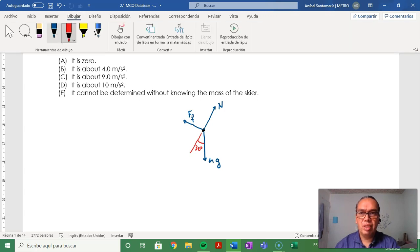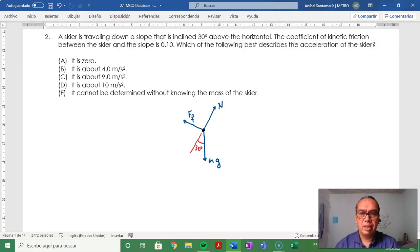Therefore, the component of the force that is accelerating the skier forward is equal to mg sine of 30. Given that the sine of 30 is 1/2, then you have 1/2 mg as a force forward. And then, because mu is 1/10...